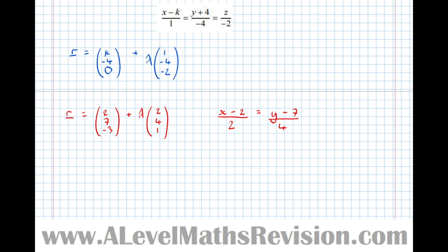Equals z minus the z component of the start point, so z minus minus 3 is z plus 3, over the z component of the direction.